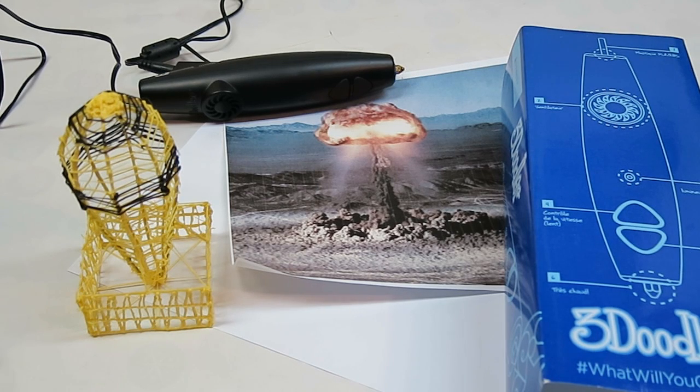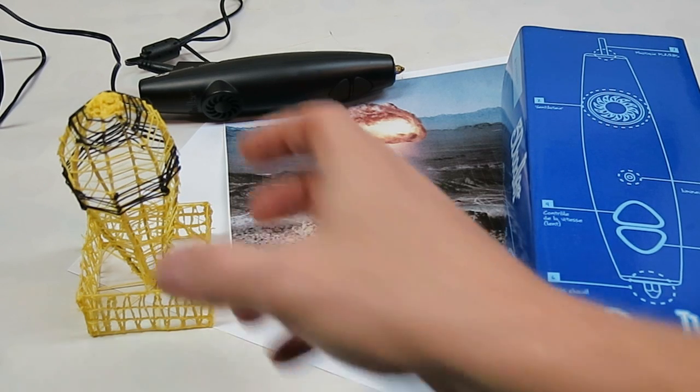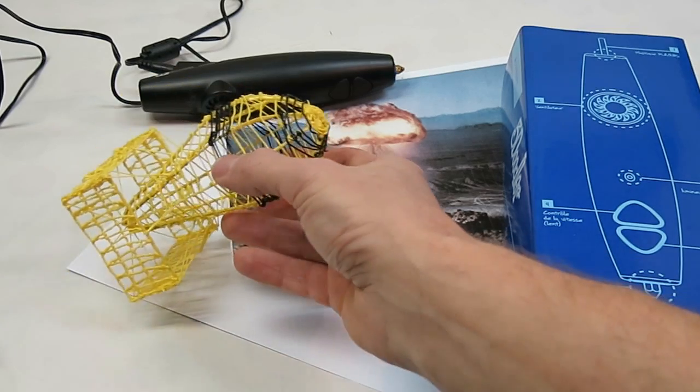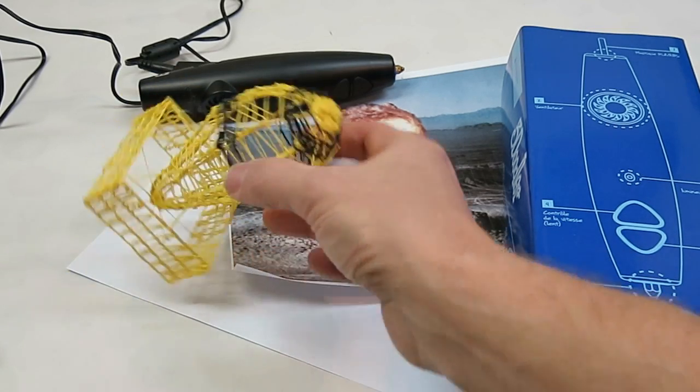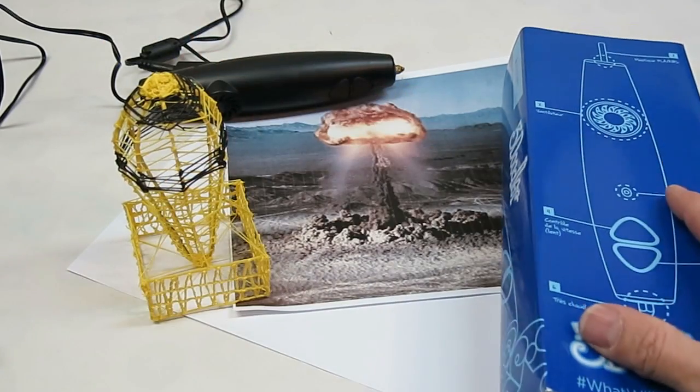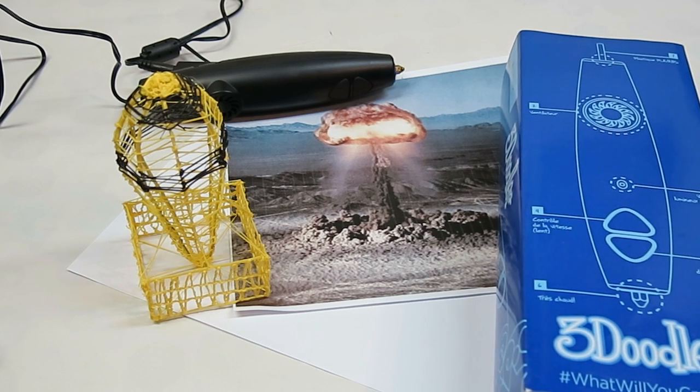Today I'm going to show you how to make a scale model of the Fat Man atomic bomb that was dropped on Japan in the Second World War using your 3Doodler 3D pen.